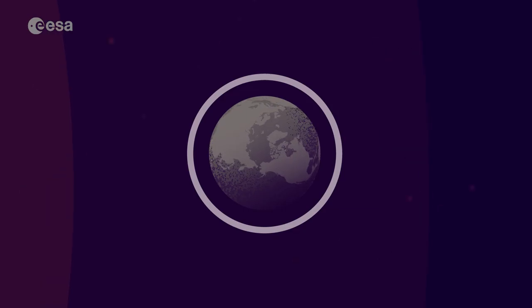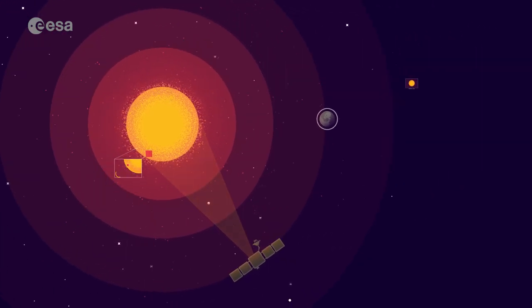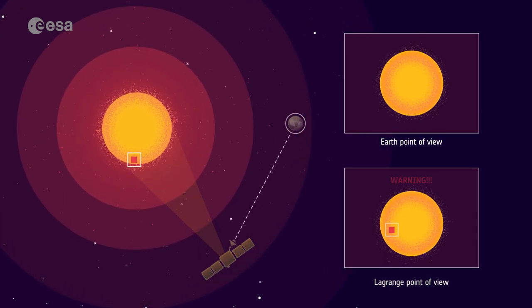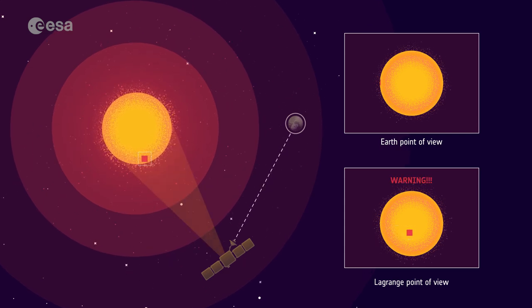The Lagrange spacecraft will have a unique side view of the Sun, enabling it to observe solar active regions, sources of flares, mass ejections and high-speed solar wind streams, before they rotate into view from Earth.